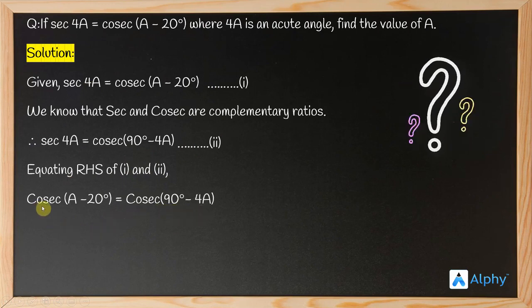Since both sides of this equation have the cosec ratio, we can equate their angles. Hence, A minus 20 degrees equals 90 degrees minus 4A.